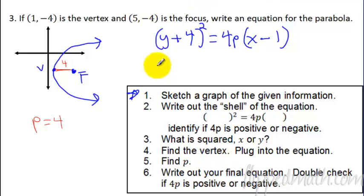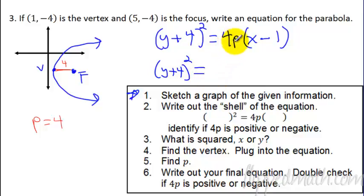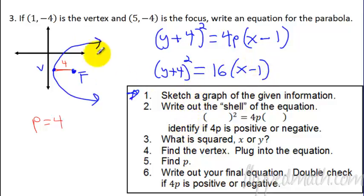Now that I've figured out what p is, I just plug it into my final equation and I am done. My final equation is: y plus 4, quantity squared, equals 16 times x minus 1. And double checking - since it opens to the right, the leading coefficient is positive. That's just a double check, positive or negative.